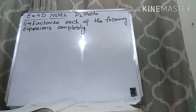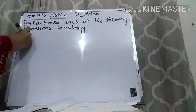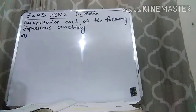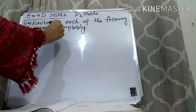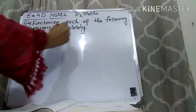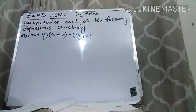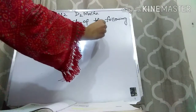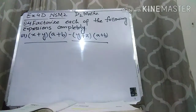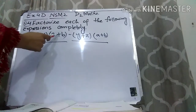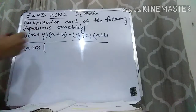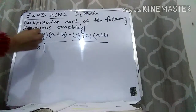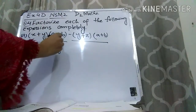Question number 4 says: factorize each of the following expressions completely, meaning we have to make the factors. The fourth part is (x plus y)(A plus B) minus (y plus z)(A plus B). We can see that in these two terms A plus B is present, so we can take A plus B common.